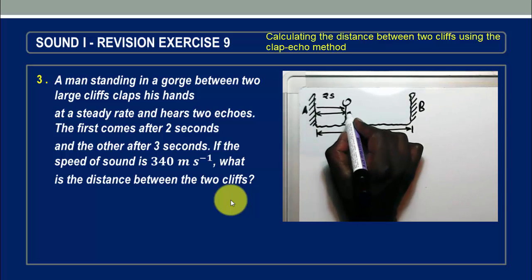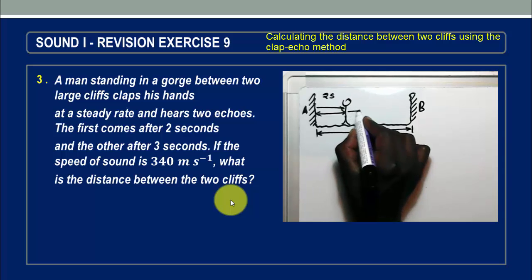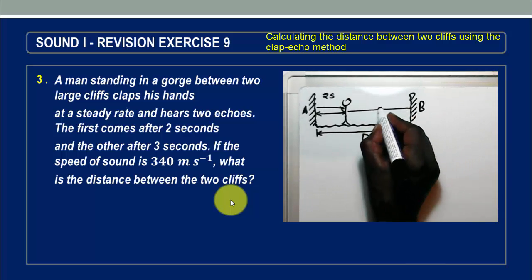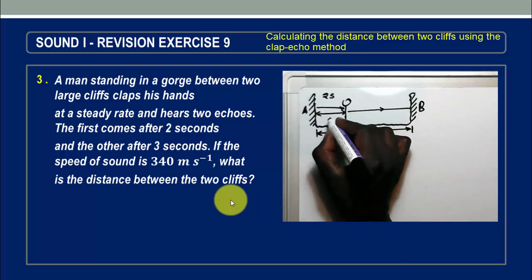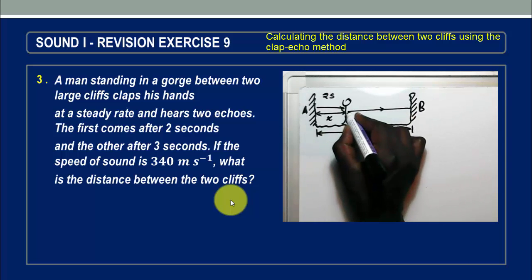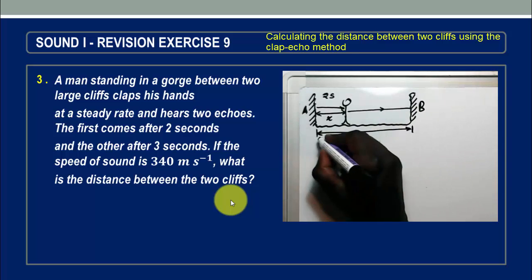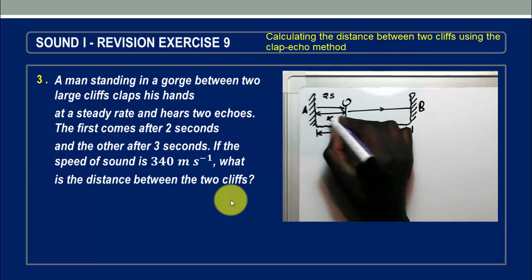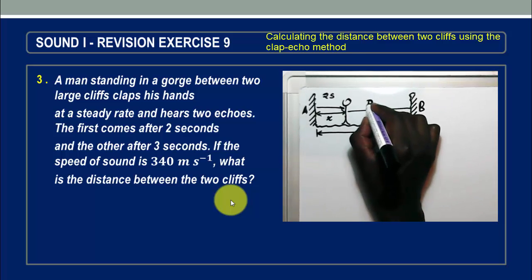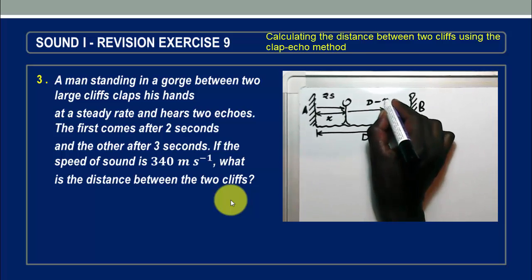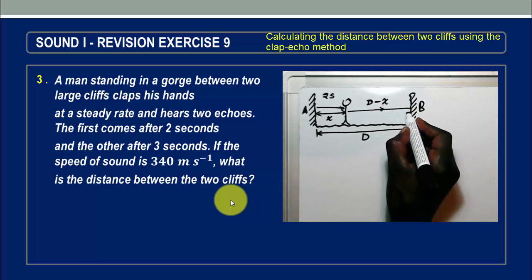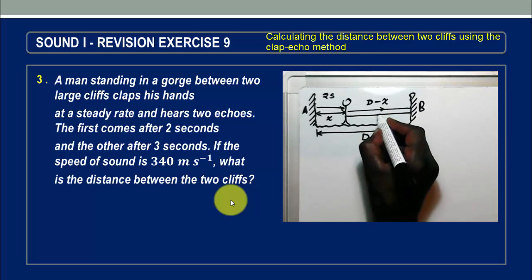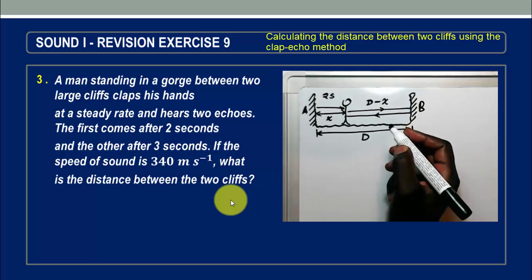On the other side, the same sound travels in this direction at the same instant. The distance we have assumed to cliff A is X. The other distance that it covers in this direction will be D minus X. So it travels through a distance equal to D minus X and returns the same distance D minus X.